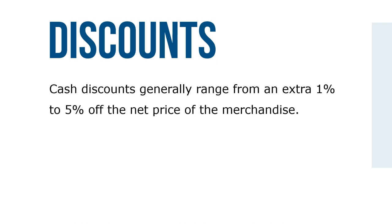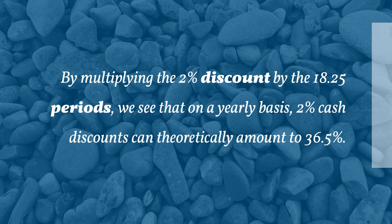Cash discounts generally range from an extra 1% to 5% off the net price of merchandise. That might not seem significant, but it is. For example, if an invoice is due in 30 days but a distributor would like payment sooner, it might offer a 2% cash discount if the bill is paid within 10 days. If the retailer takes the cash discount, he or she must pay by the 10th day — 20 days earlier than the due date. The logic: there are 18.25 twenty-day periods in a year (365 ÷ 20), and 2% times 18.25 means that on a yearly basis, 2% cash discounts can theoretically amount to 36.5%.